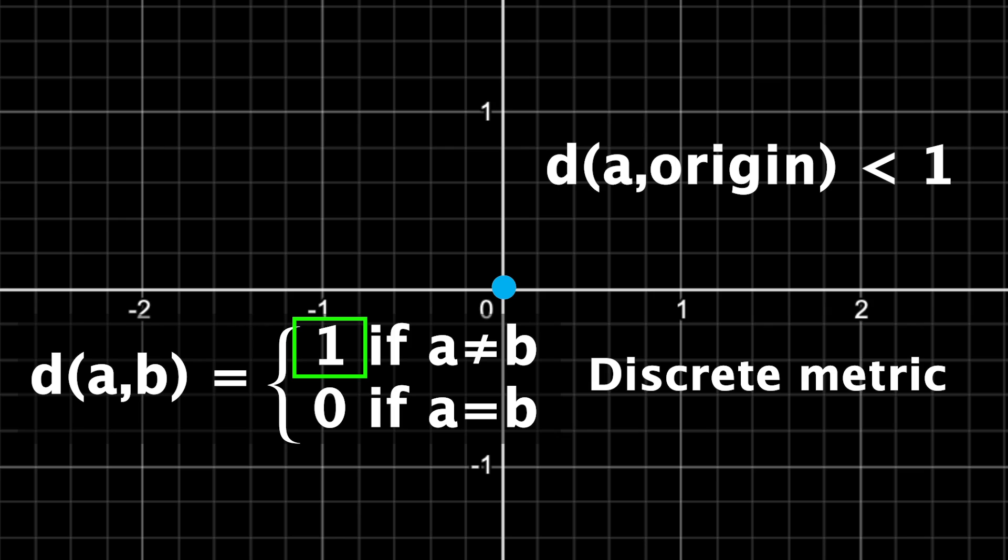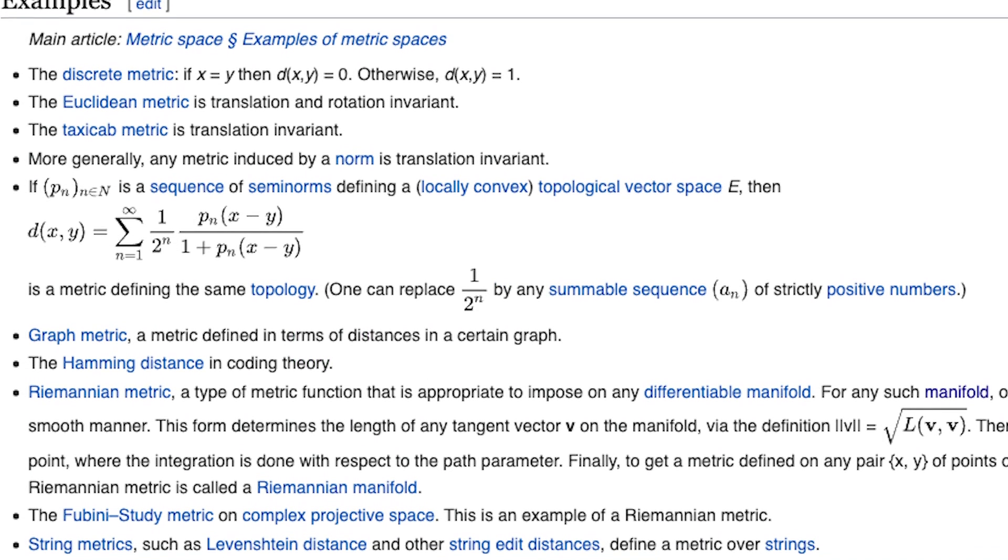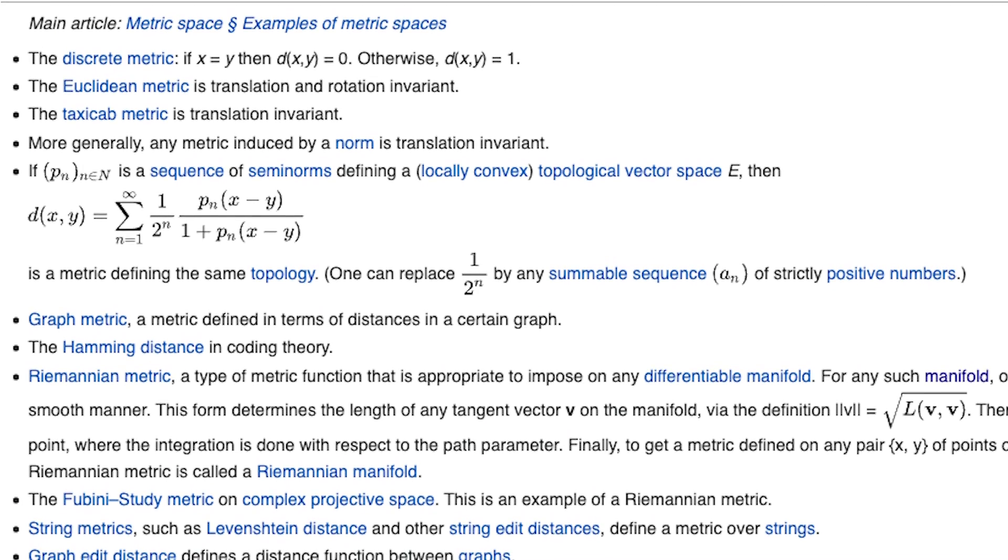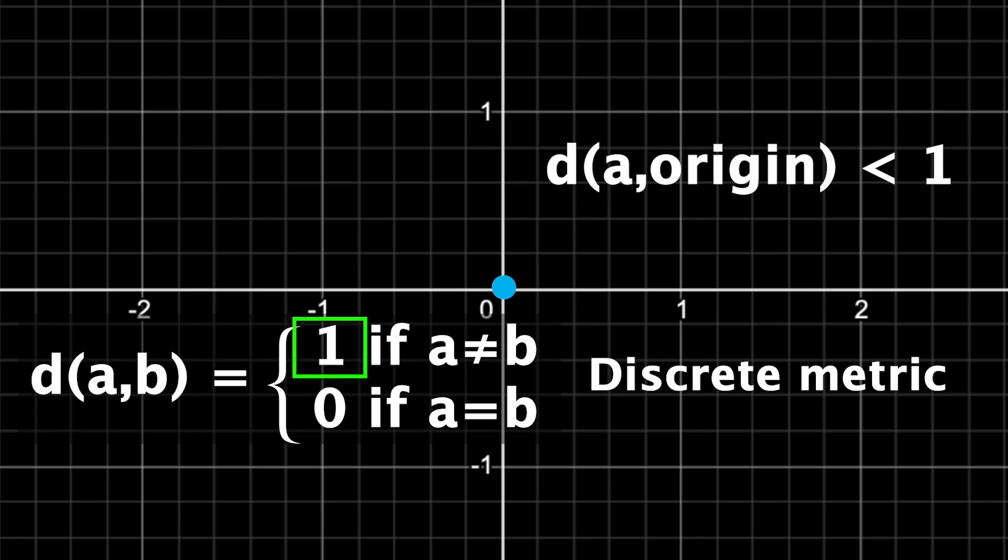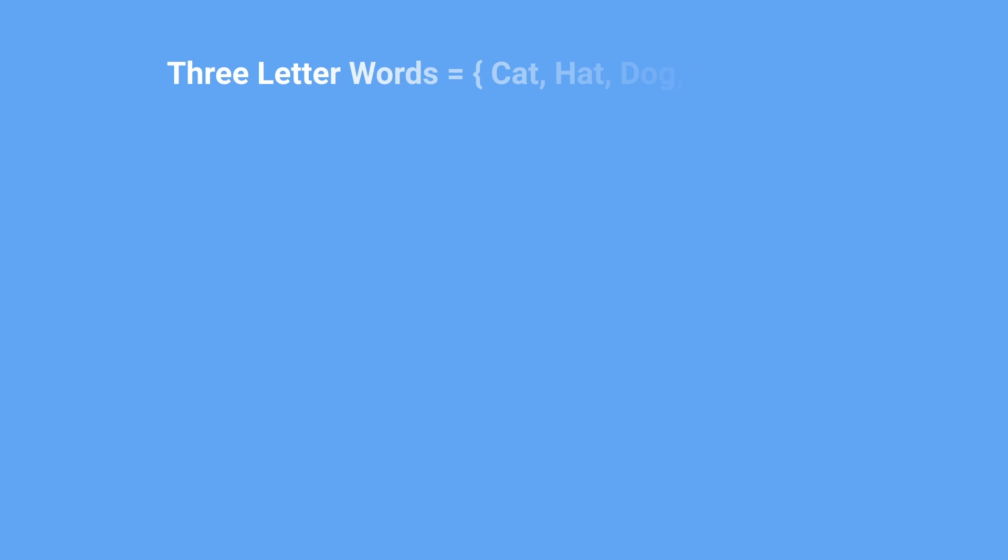Now, there are a lot of applicable metrics out there, but something important to note is that the metric space doesn't have to include coordinates or locations. It can be a set of anything, like the set of all three letter words. Yes, we can define a metric for this set, and amazingly, this does have applications.